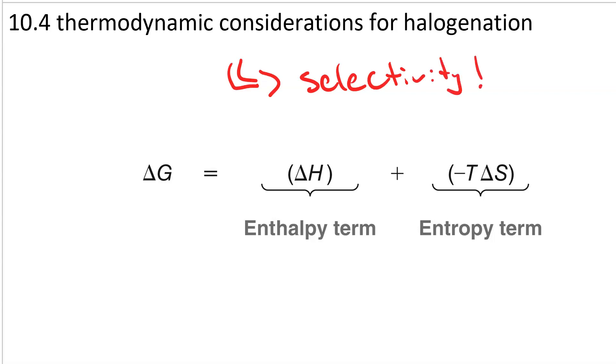Recall, delta G has an enthalpy term, delta H, and an entropy term, minus T delta S.